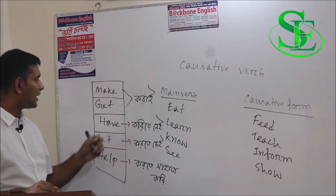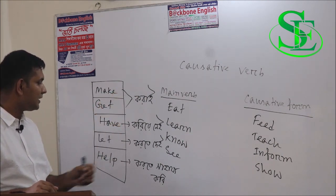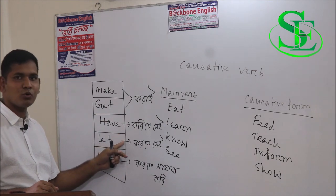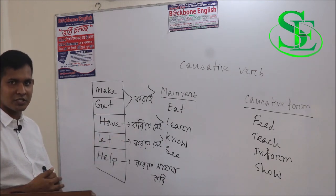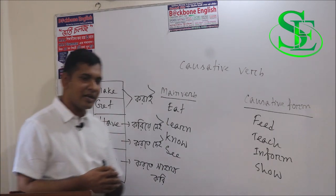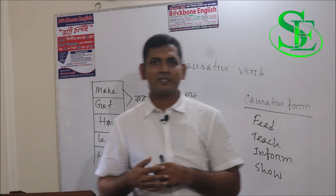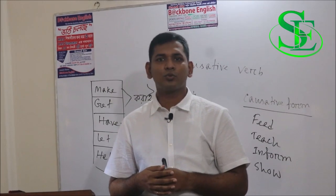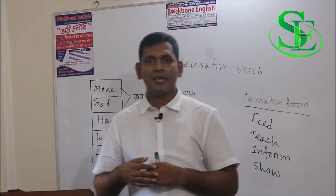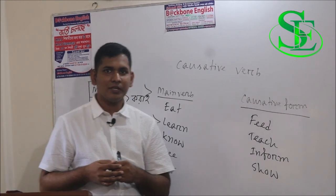Where 'make' and 'get' mean 'karai' (to cause someone to do), 'have' means 'kariye neyi' (to get something done for oneself), 'let' means 'korte deyi' (to allow to do), and 'help' means 'korte shahadjo kari' (to assist in doing).